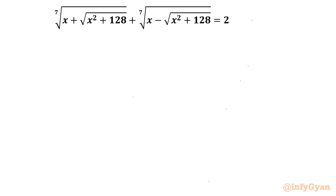Welcome to Infigyan friends. In this exciting video on algebraic challenging equations, we are going to take up one very interesting radical equation today. The equation is: the 7th root of (x plus square root of (x squared plus 128)) plus the 7th root of (x minus square root of (x squared plus 128)) equals 2.